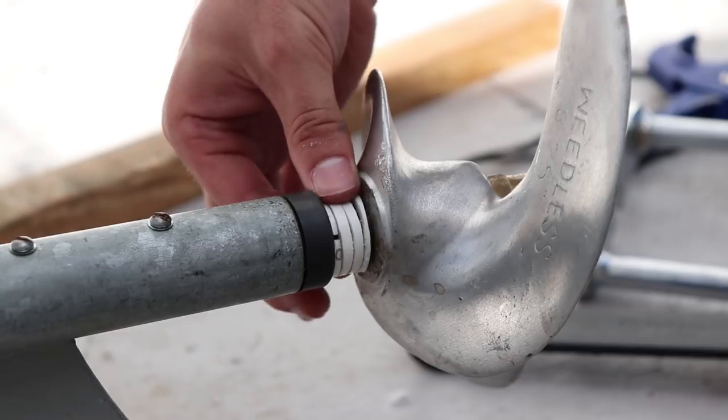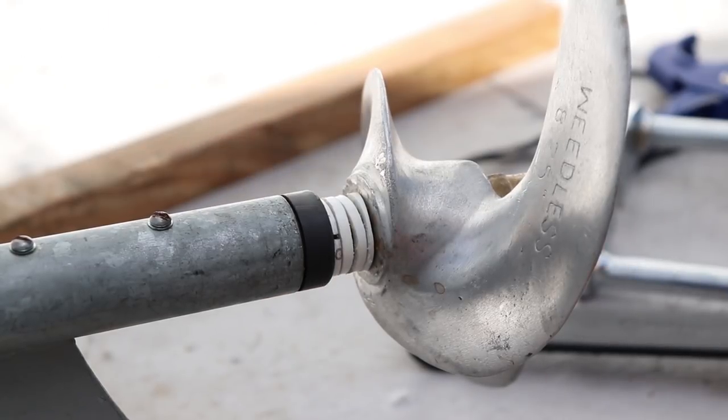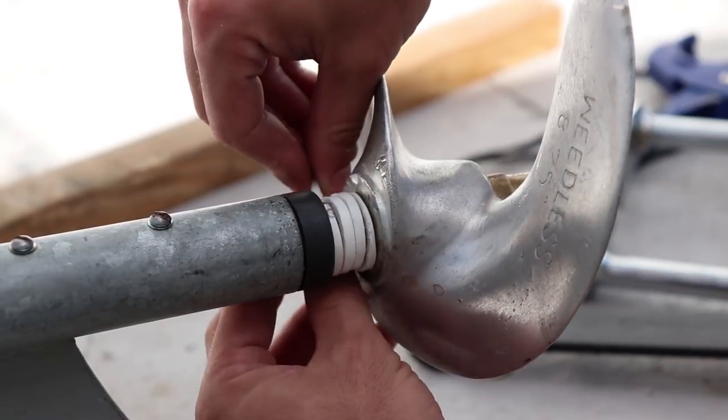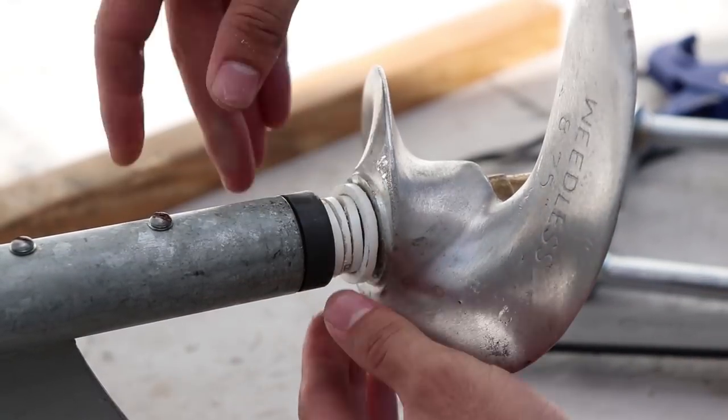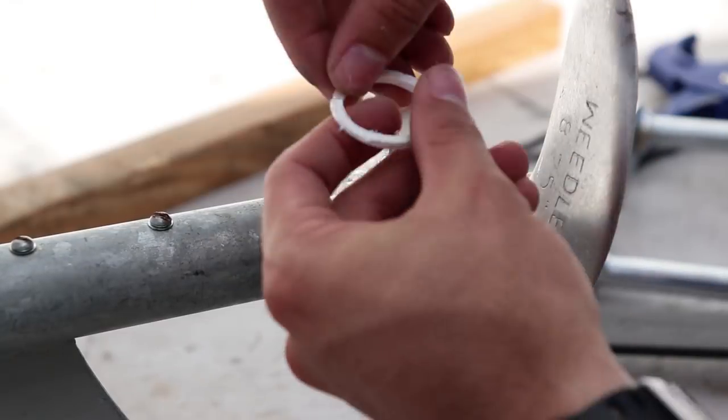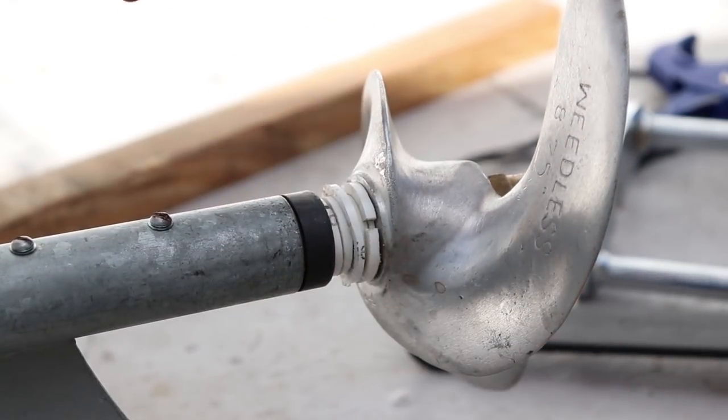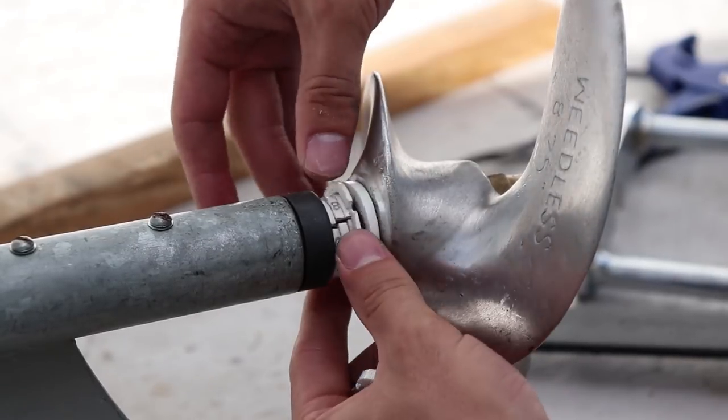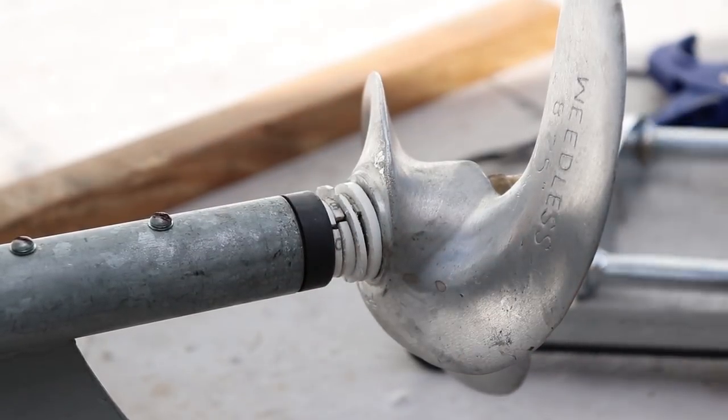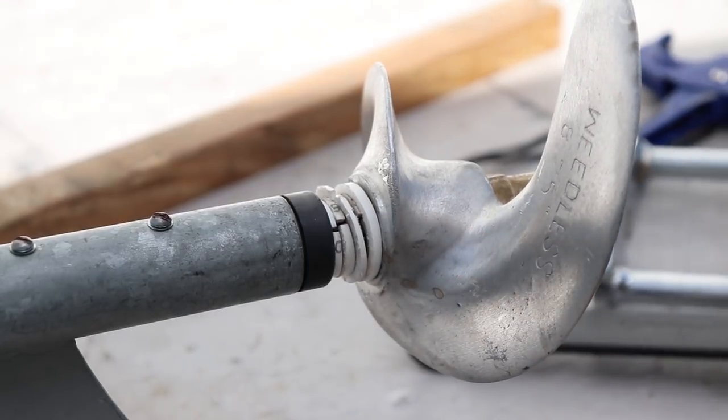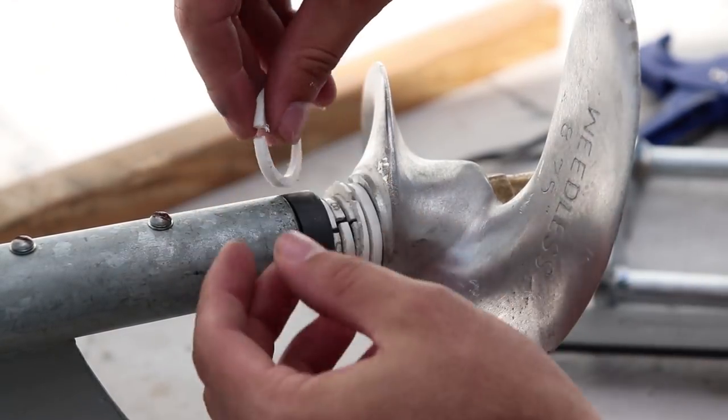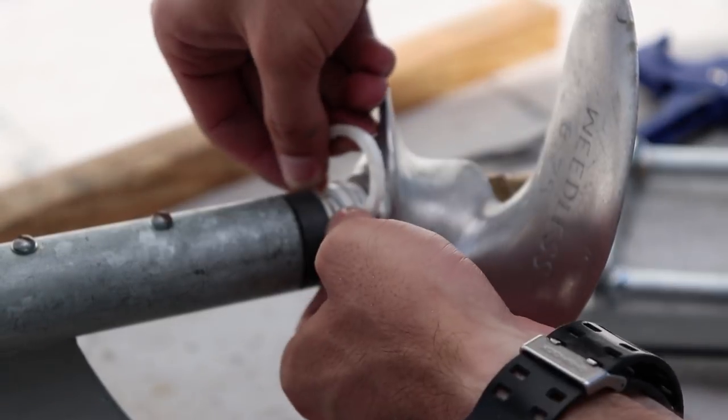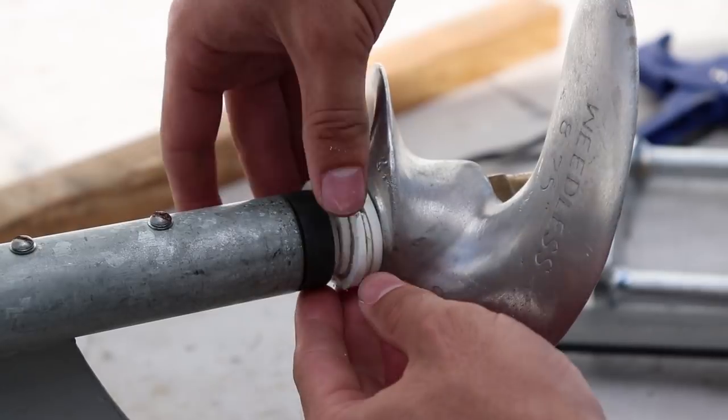Instead of having that whole spacer just as one, I went ahead and cut it into slices so that way I can actually bend it on. Clip it on there so that way it's removable without having to take the prop off. So if I have to take the prop off I can pop all these off and then use the prop puller to pull the prop off. If I can't remove these then I can't get the prop puller on there and it's an absolute awful experience trying to get the prop off without the prop puller.